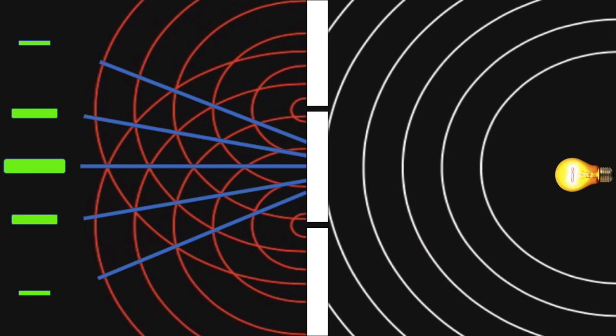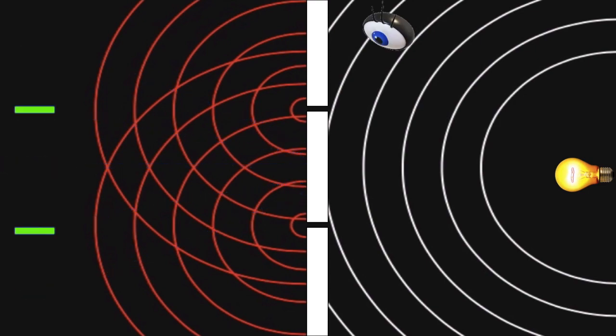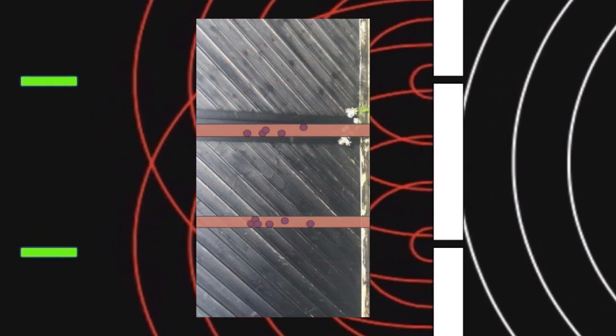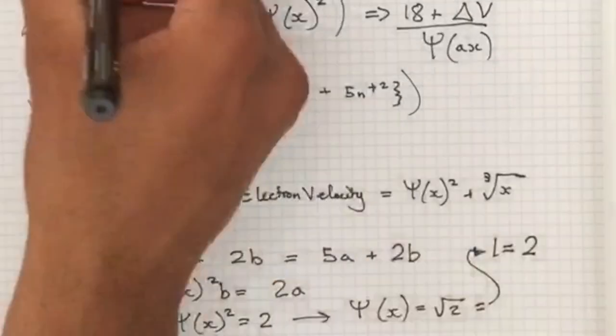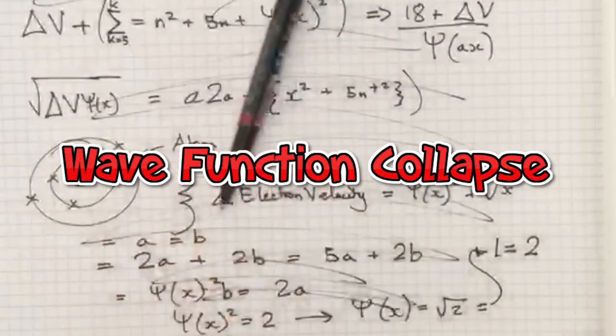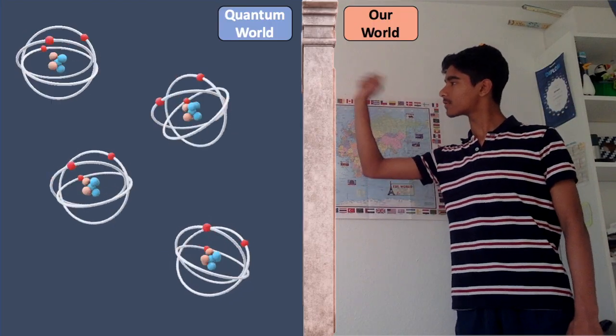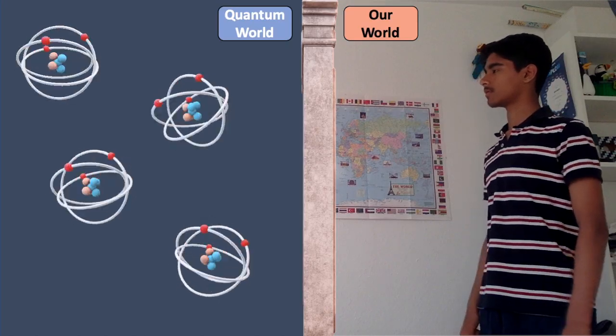However, there's a problem. If we add an observer to the experiment, the interference pattern created will change into an ordinary pattern, similar to the one created by the stones. Scientists don't quite understand why this happens, but what I can tell you is that this is called a wave function collapse. Very simply, it's there because of an interaction with an external world.